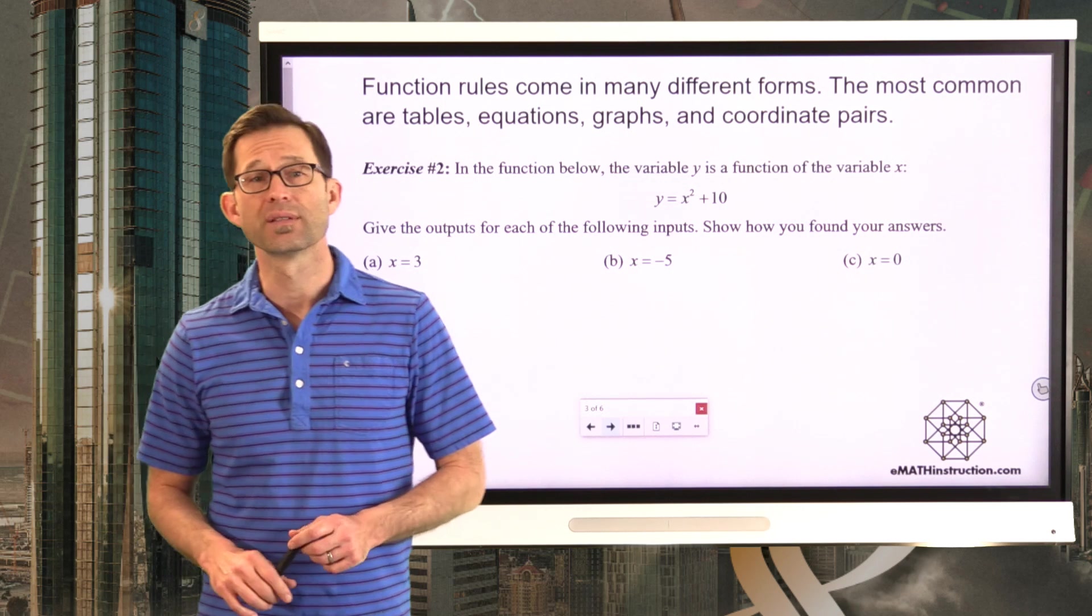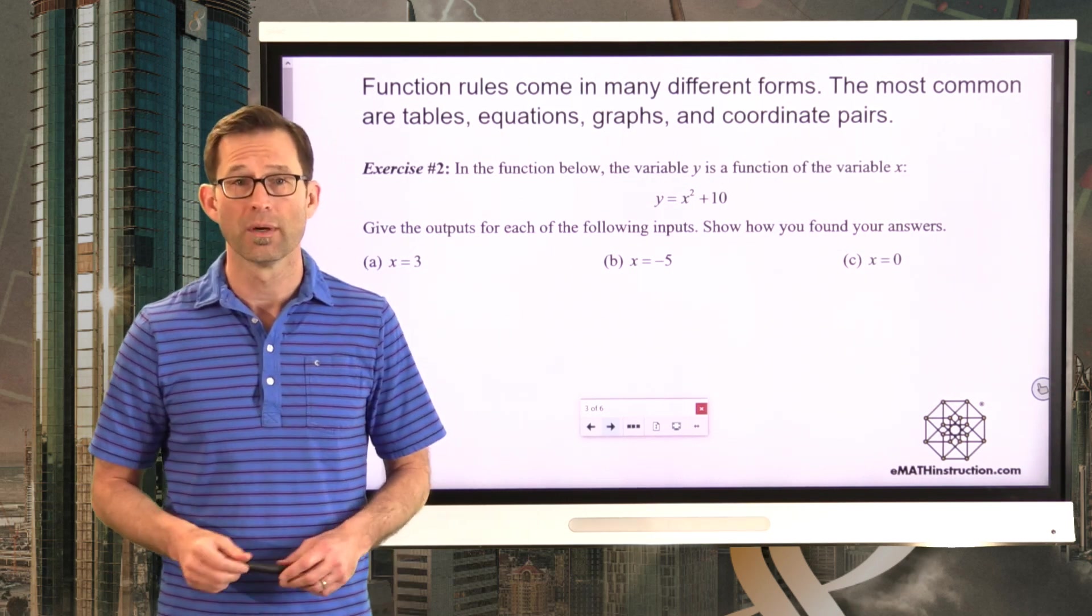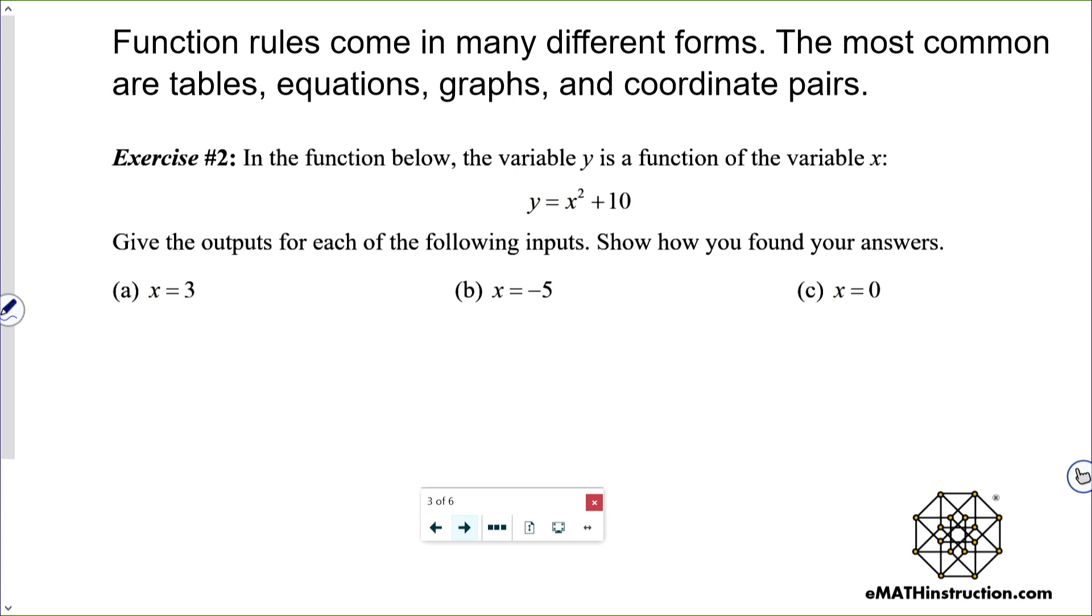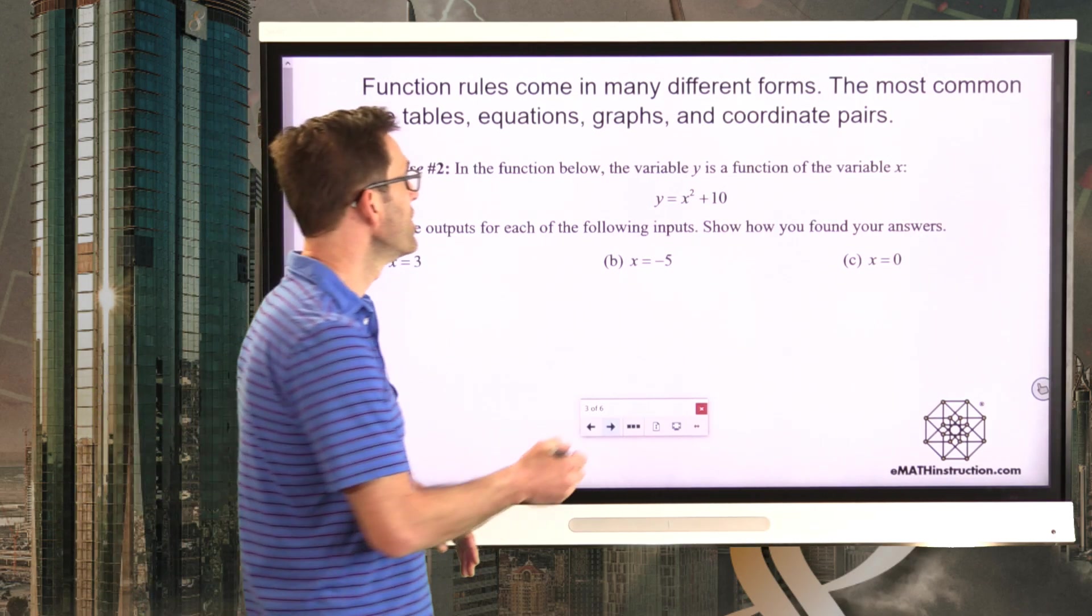Let's take a look at exercise number two, where we deal with a function that's given in an equation form. In the function below, the variable y is a function of the variable x. Y equals x squared plus 10. Give the outputs for each of the following inputs. Show how you found your answers. Now, again, I want to be very clear.